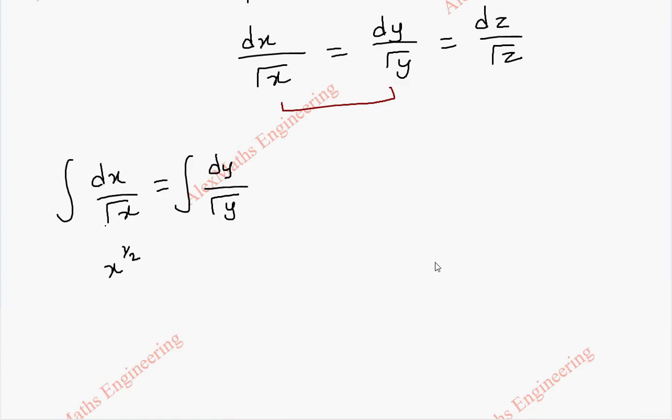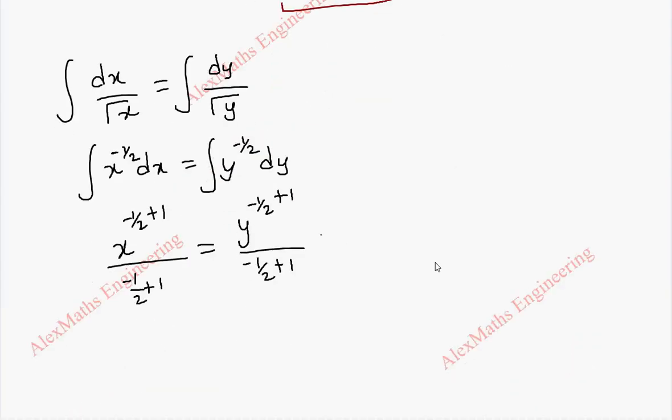And when we integrate using x power n formula, x power n plus 1 by n plus 1. Here y power n plus 1 by n plus 1. In both the cases, n is minus half. And we have a constant plus c1. So this is x power half by half equal to y power half by half plus c1.